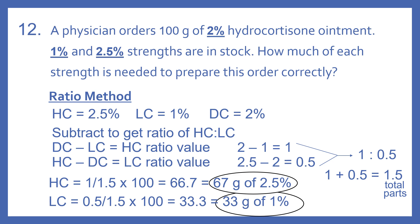Now we need to subtract to get a ratio of HC to LC. We take the DC minus the LC, and that gives us our HC ratio value. Then we take the HC minus the DC, and that gives us our LC ratio value. So for the HC ratio value, we take 2 minus 1, which gives us 1. For the LC ratio value, we take 2.5 minus 2, and that gives us 0.5.